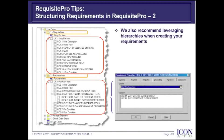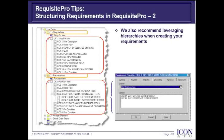On the right-hand side of this slide, I'm demonstrating how one can establish a parent-child relationship between requirements. I'm viewing the properties of UC2.4 Customer Quits Purchasing Items, and I see that its parent is UC2 Purchase Item, and its children are UC2.4.1 Quit Save the Current Order and UC2.4.2 Quit Do Not Save the Current Order.